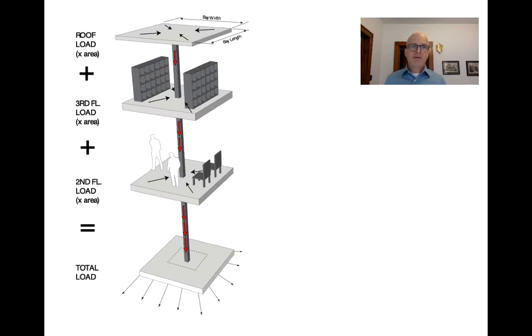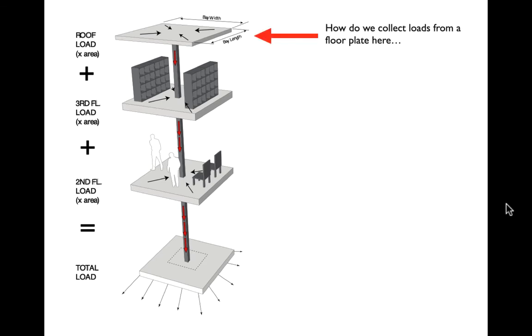So, we have looked a little bit at tributary area at how we calculate loads in particular on columns, taking bay sizes, multiplying them to get the area of a typical bay, giving ourselves an assigned combined live and dead load, usually from the code or from standards for that, and then just sort of assuming that all of that kind of spills nicely into columns floor by floor. The question is, how do we get those loads into the columns in the first place? And in particular, how do we keep the slab from punching through?